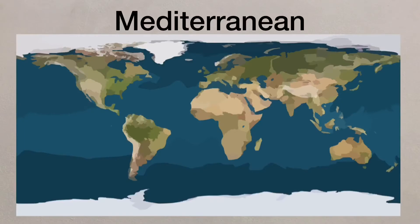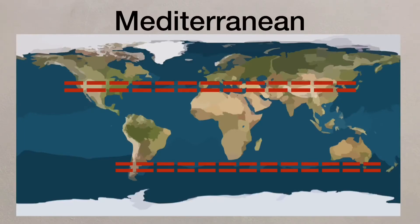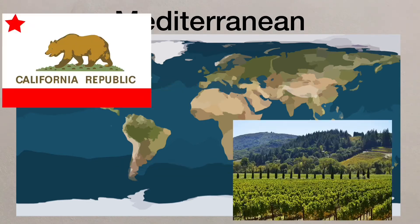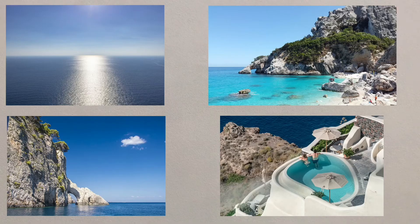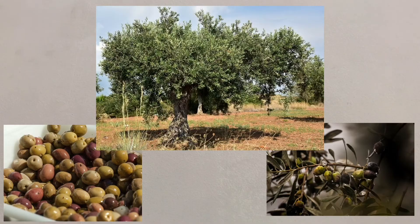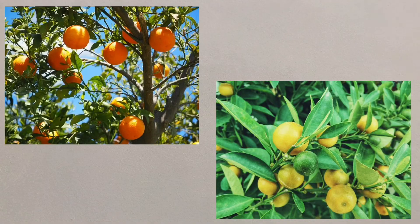The Mediterranean ecosystem can be found 40 to 45 degrees from the equator in pockets both north and south. Countries around these Mediterranean style areas like California in the USA and parts of Australia have hot and dry summers with milder winters. Mediterranean vegetation includes olive trees and fruit trees.